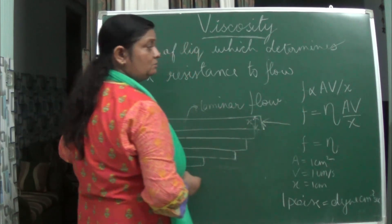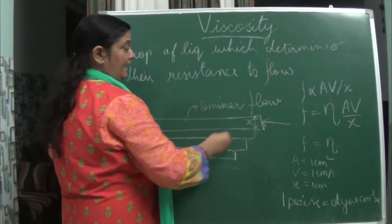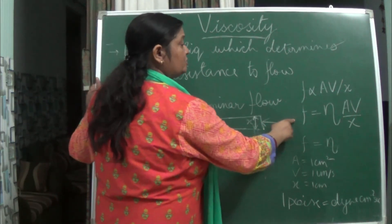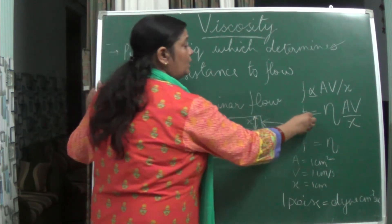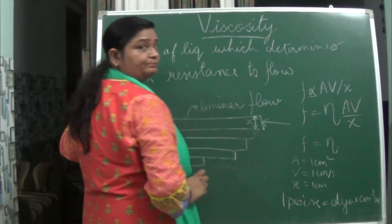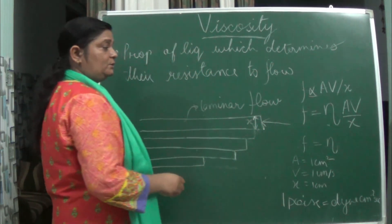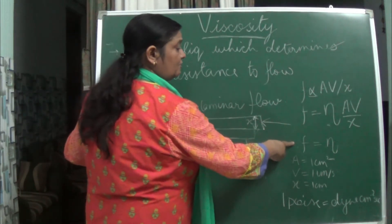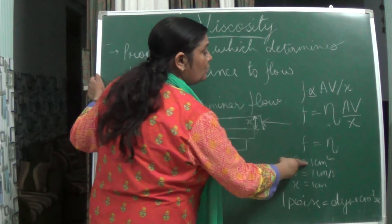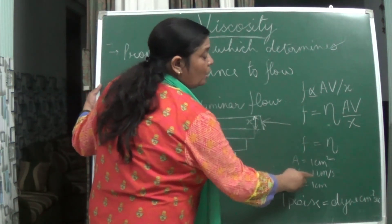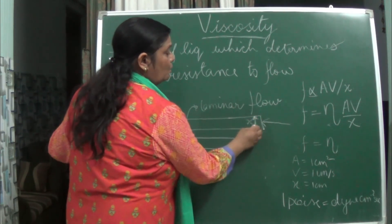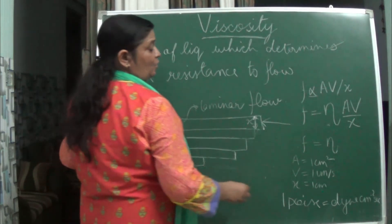Frictional force is directly proportional to area times velocity divided by x, where x is the distance of separation of the layer. When we remove the proportionality sign, frictional force is equal to the coefficient of viscosity multiplied by area times velocity divided by x. Frictional force equals the coefficient of viscosity when area equals 1 cm², velocity equals 1 cm/s, and x equals 1 cm.